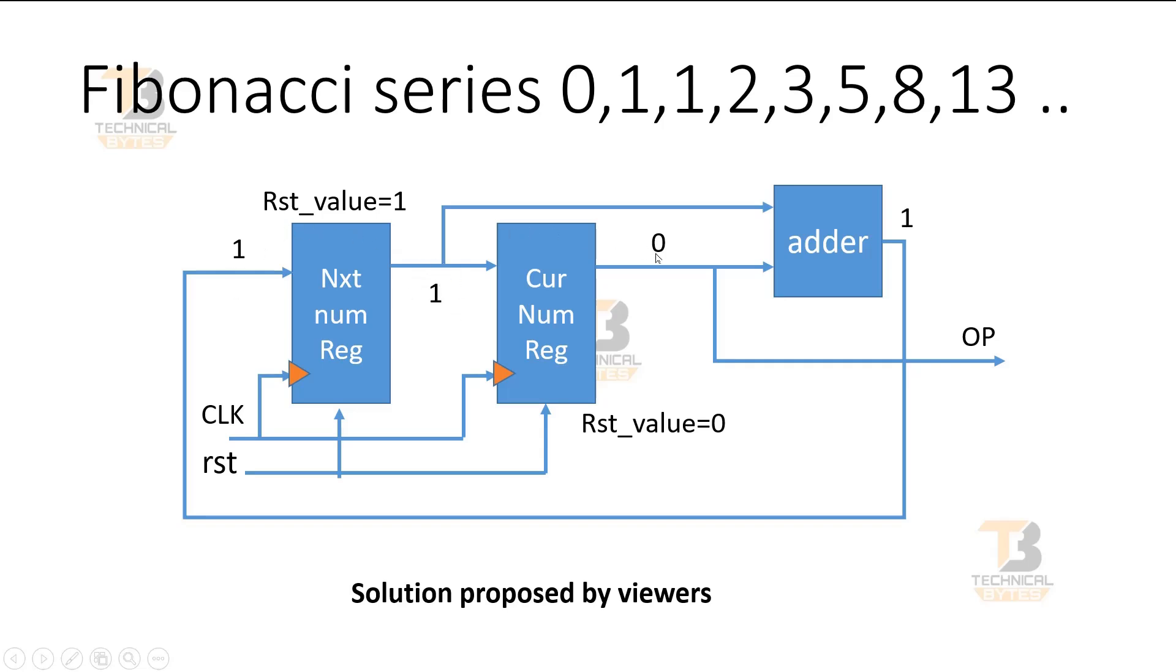Now as soon as the next clock edge comes, this 1 will be transferred at the output of the second register and the other 1 will be transferred at the output of the first register. Both these ones will be applied to the adder and the adder will immediately give the output 2.